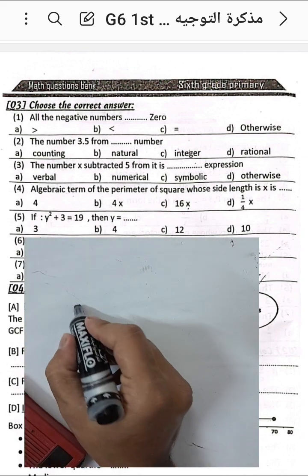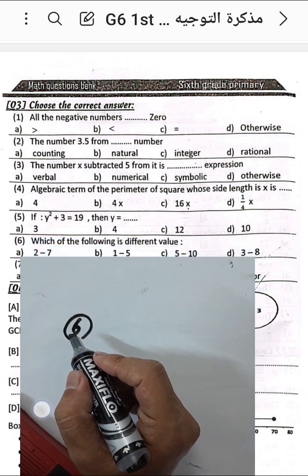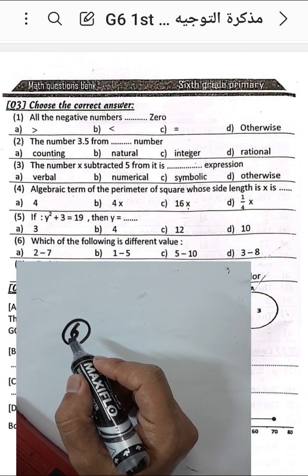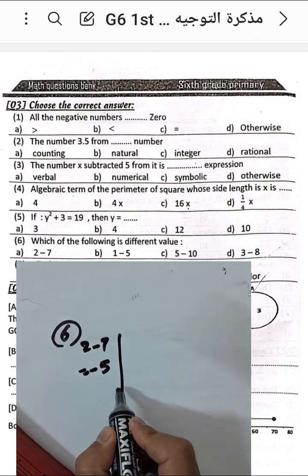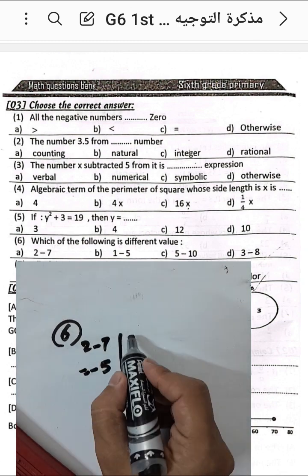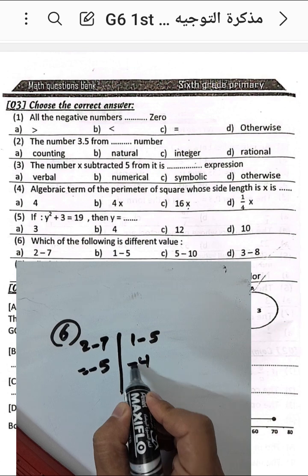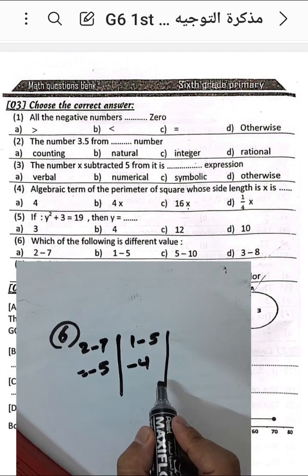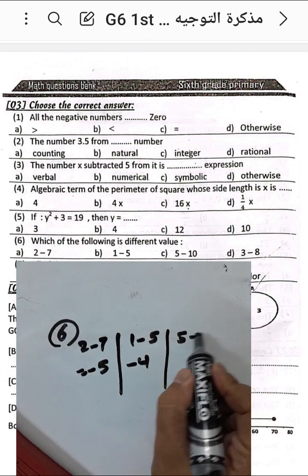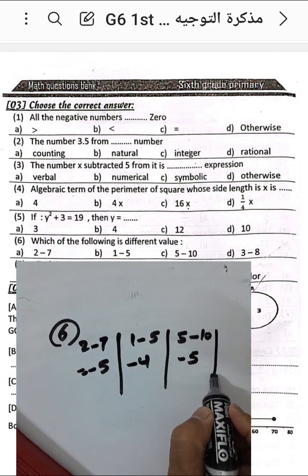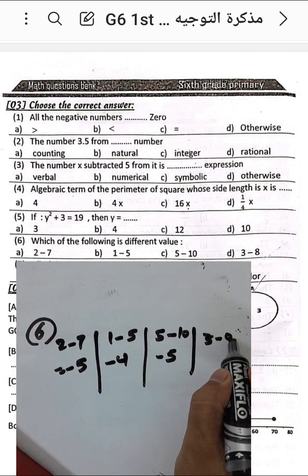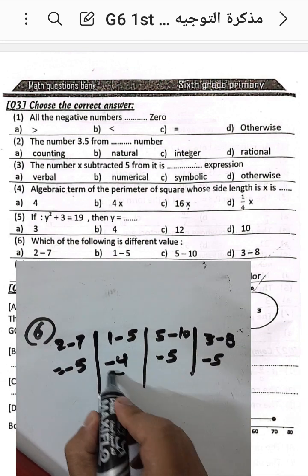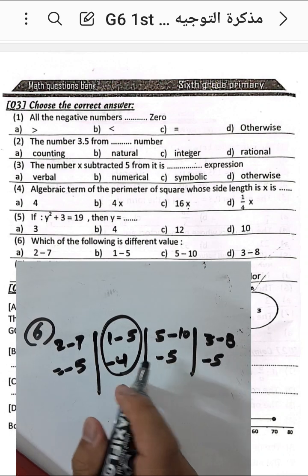Question number six: which of the following has a different value? We have 2 minus 7 equals negative 5, 1 minus 5 equals negative 4, 5 minus 10 equals negative 5, and 3 minus 8 equals negative 5. The different result is negative 4.